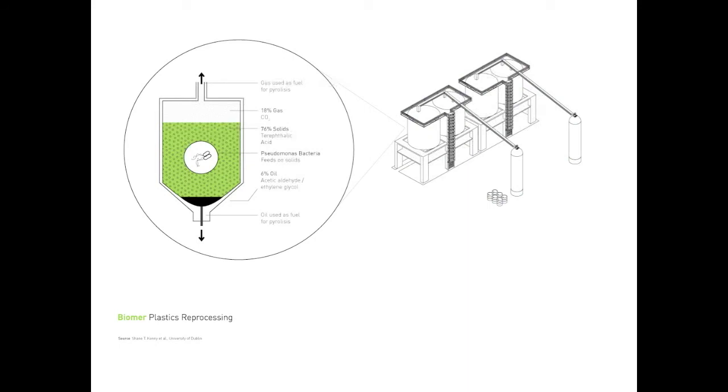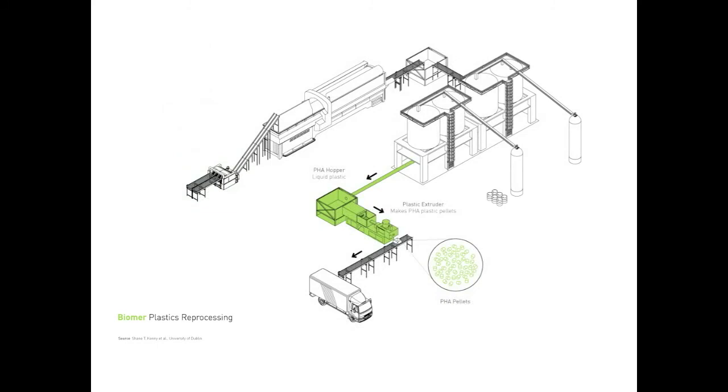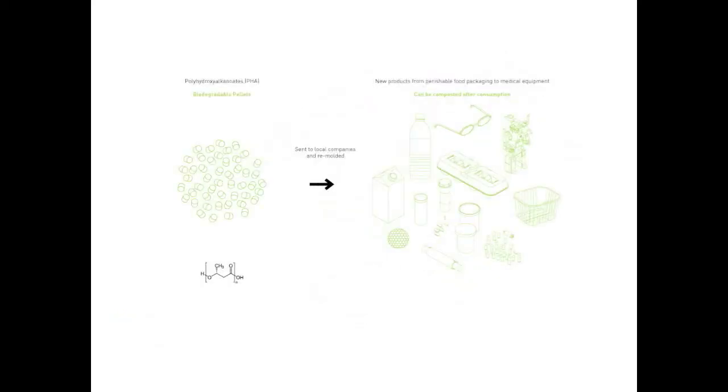The pseudonymous bacteria feeds off the solid element, and in the process converts it into high-quality biodegradable PHA plastic, whilst the oil and gas provide the fuel for pyrolysis. The resulting PHA plastic is then transported to local enterprises to manufacture new goods from the PHA pellets, using existing plastic manufacturing processes.